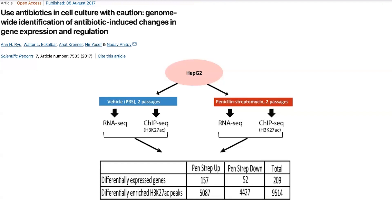They found that a lot of the genes were differentially regulated — the cells seemed to be stressed in the presence of the antibiotic. They were able to show correlation between the different methods of measuring it, so it seemed really legit.